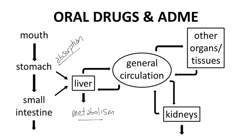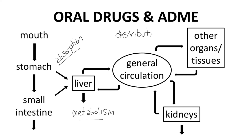Once the drug passes through the liver, it will reach the general circulation. From the general circulation, the drug will have access to all other parts of the body. At this point, the drug will undergo distribution — the D in ADME — distribution to and from all parts of the body.